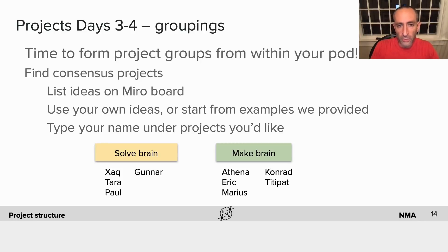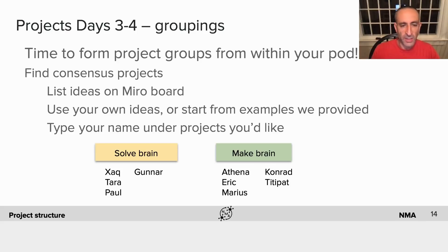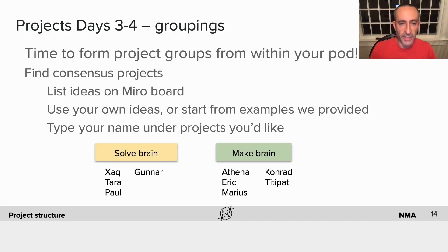In days three and four, you'll start to form those project groups. This is something you want to find by consensus — gather people who are happy working on the same project. You have all those ideas in the Miro board and it's time to say, okay, this is what group one is going to work on, this is what group two is going to work on, and people can drag their names under these things. If a lot of people like one group and there are too many, you might split that group up. Those ideas can be drawn from the brainstorming session as well as from project examples that we provide.